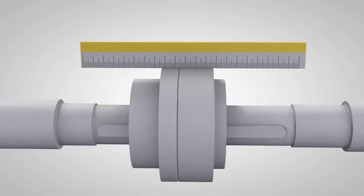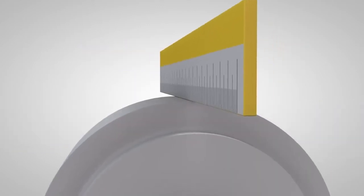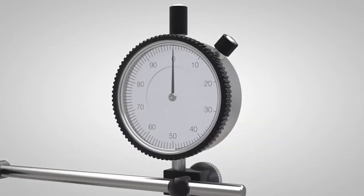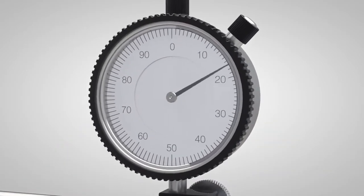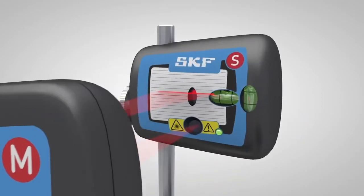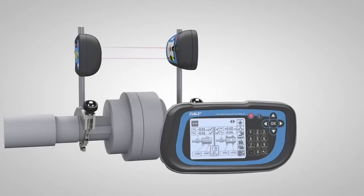Today, three alignment methods are commonly used. Straight edges or eyesight, which are fast and easy methods but not accurate. Dial gauges, which allow high accuracy but are complicated to use. And laser alignment systems, which are very accurate and easy to use but require a higher investment.